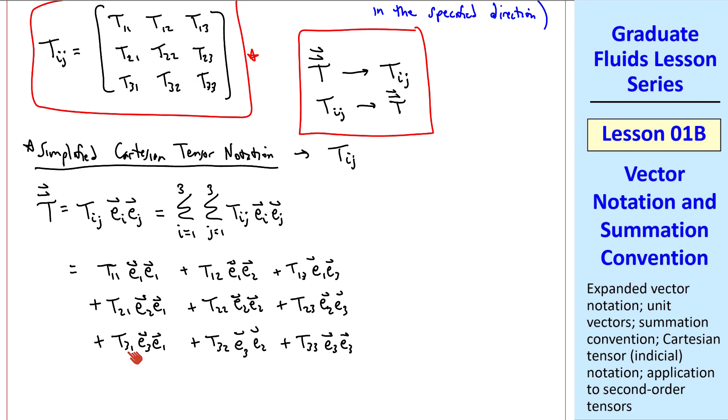Compare, for example, this row with this row. Each of these unit vector products is a dyad or a dyadic product. This first row represents keeping i equal 1 and summing j, and then this second row is keeping i equal 2 and summing j, and then keeping i equal 3 and summing j.